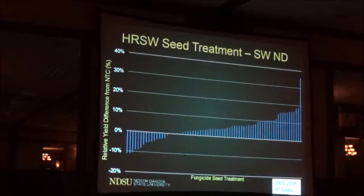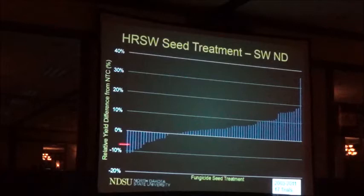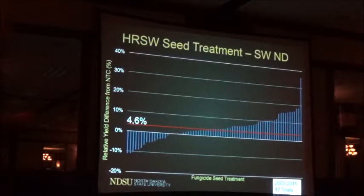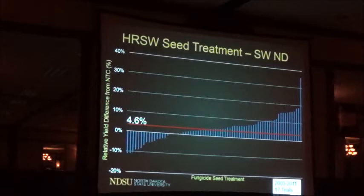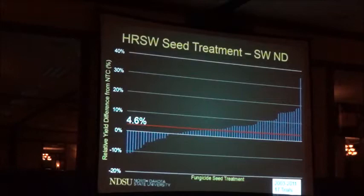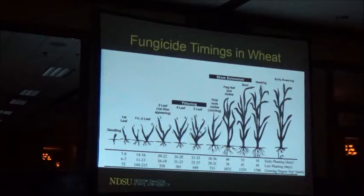Condensing the data to southwest North Dakota—trials done in the Dickinson, Dunn Mountain, Mott, and Regent area—the same type of trend holds: some highs, some lows, roughly the same average response. We plan to run full statistics to generate a probability of seeing this response. This is something we'll continue at NDSU: looking at seed treatment performance across these trials.